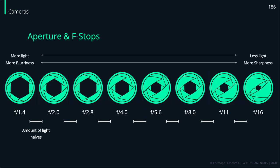To understand f-stops a little more: every f-stop step means the amount of light halves. For most lenses, f/1.4 is the widest you can get. With each step up, only half as much light reaches your sensor as the stop before. A larger opening means more light and more blurriness. A small opening and a large f-stop number means less light but more sharpness in your image.